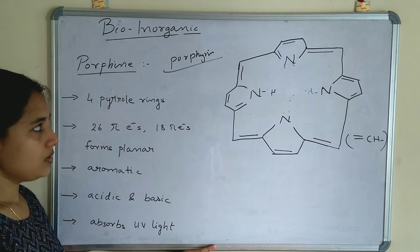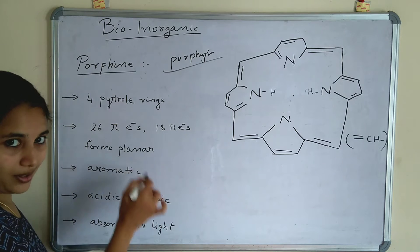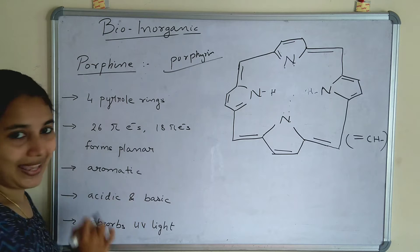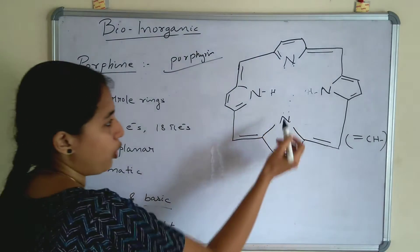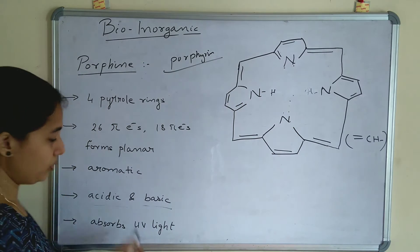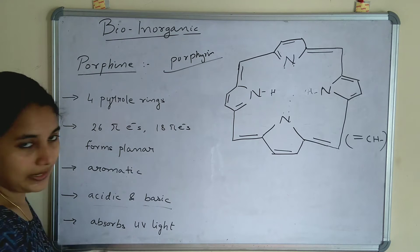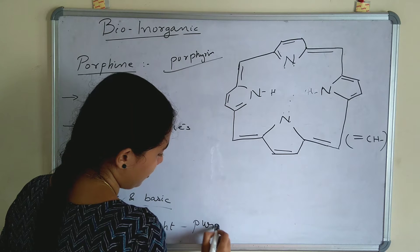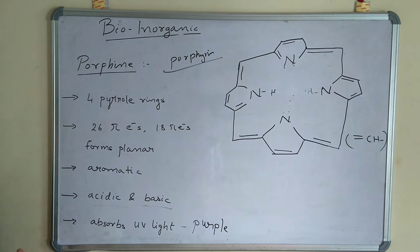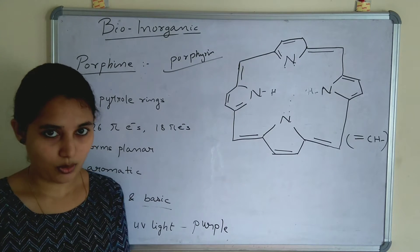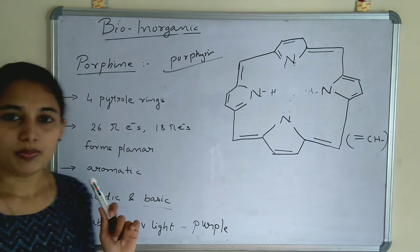Porphine constitutes 26 pi electrons, and 18 pi electrons form a planar aromatic molecule. It can act as both acidic and basic — it can accept H+ and donate H+ as well. It absorbs UV light and gives a purple color. Purple color is given by the porphine molecule. It is a macro cycle, a hetero macro cycle compound, and the hetero atom is nitrogen.